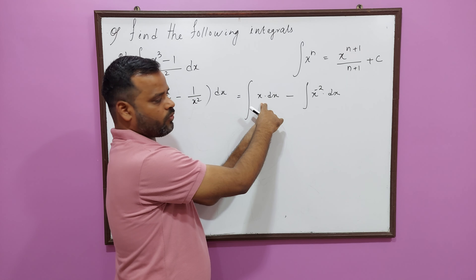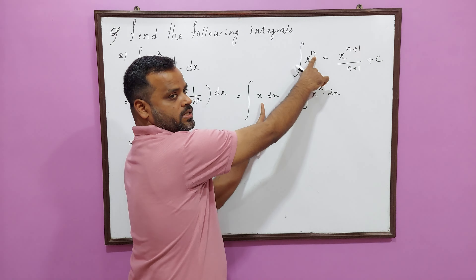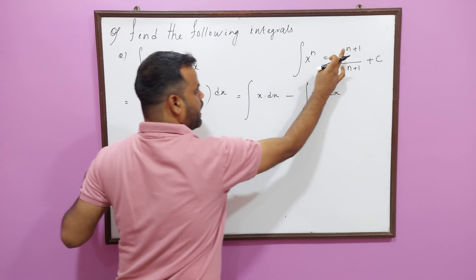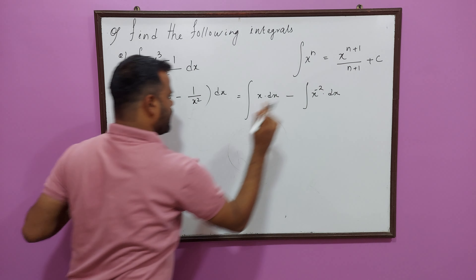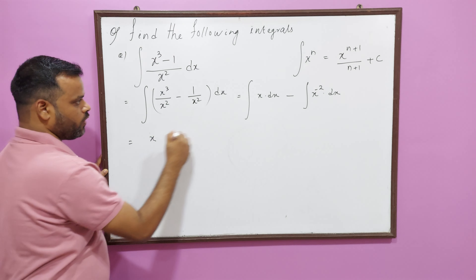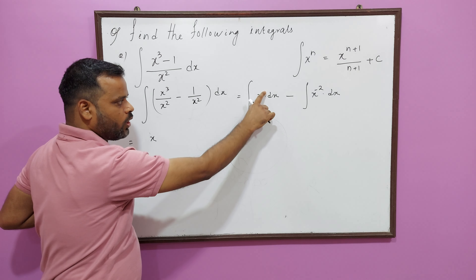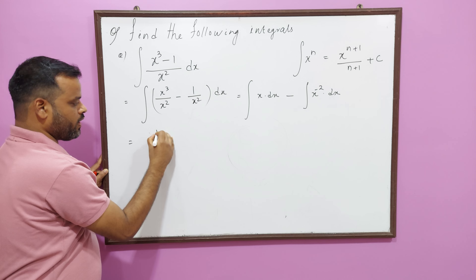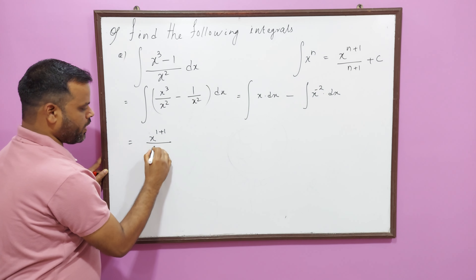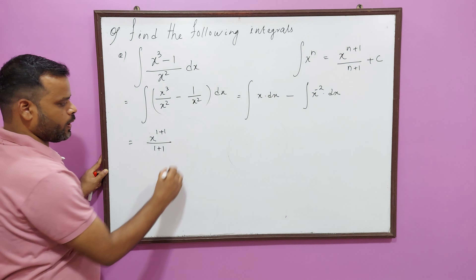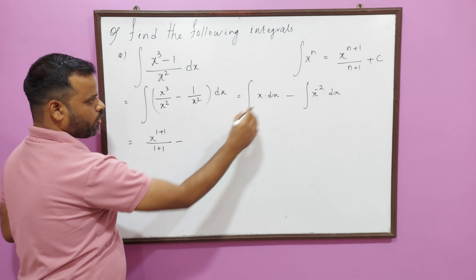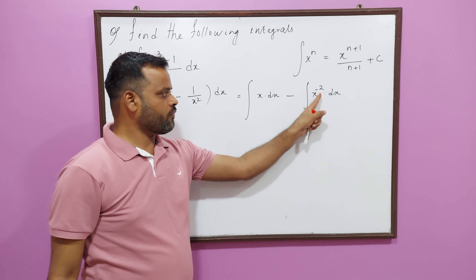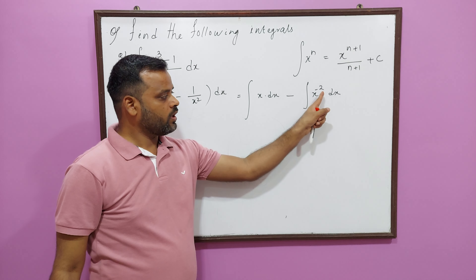Now, look here — we split the expression: x cubed divided by x squared minus 1 divided by x squared, all multiplied by dx. We further divide it into the integration of x cubed over x squared, which equals x dx, minus the integration of 1 over x squared, which is x to the power minus 2, dx.